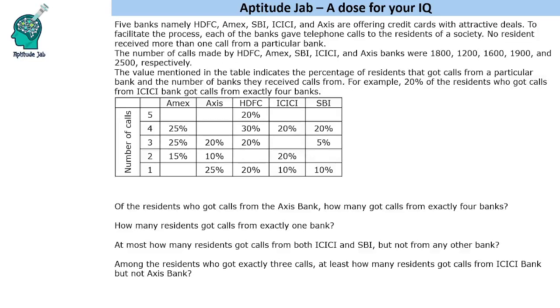Hello everyone, welcome to Aptitude Jab. This set says that there are five banks offering credit cards, and for this they gave telephone calls to residents of a society.